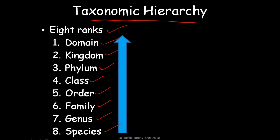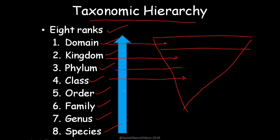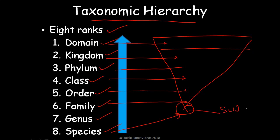Each category or rank is like a pyramid — or an inverted pyramid. Domain forms the base and is more generalized. Then kingdom, then phylum. As you go to the tip of the pyramid, you reach species. Species can be further divided into subspecies. That's how the complete categorization takes place.